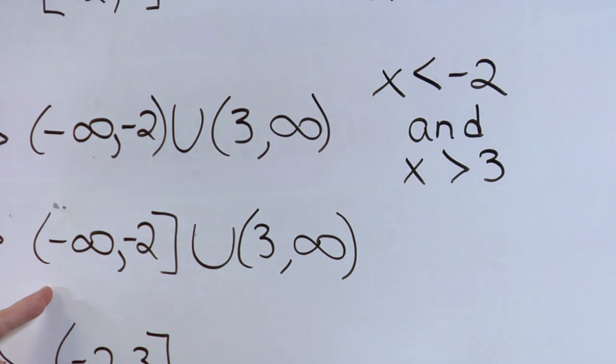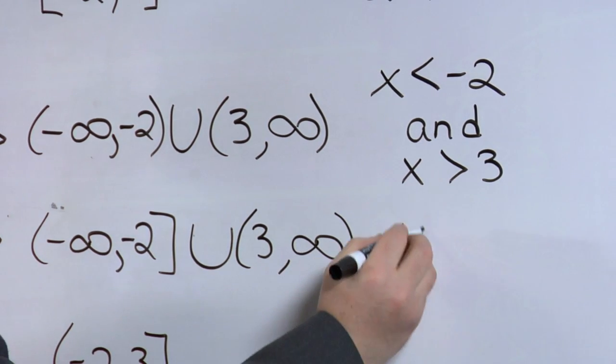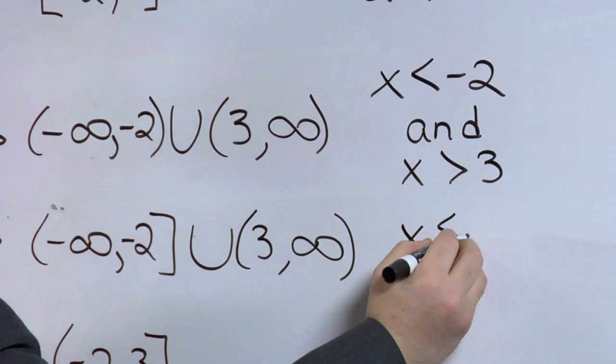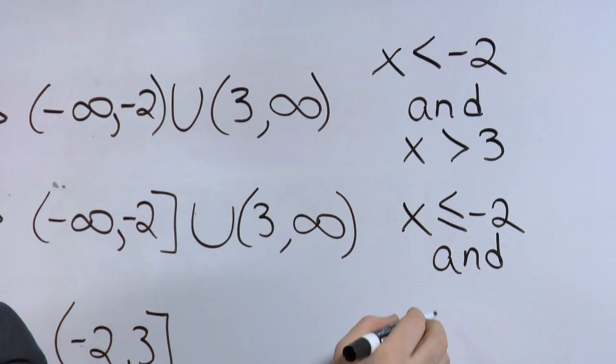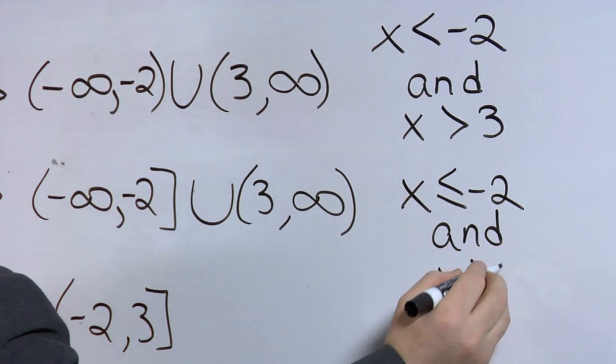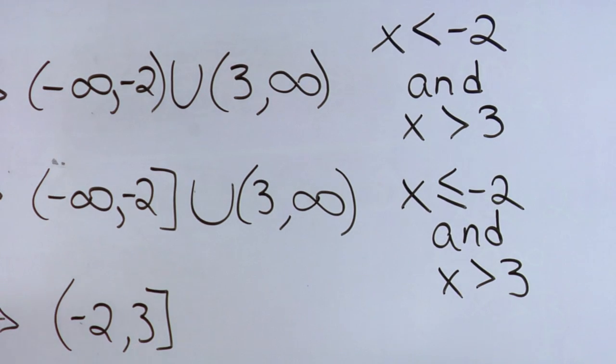The third example would be all values x less than or equal to negative 2 and x is greater than 3.